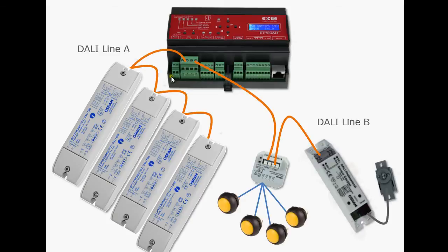All four ballasts are connected to DALI line A of the Ethernet to DALI. All input devices are connected to line B. Of course, you can have ballasts and input devices in one DALI line. One comment regarding light sensors: they are not defined in the current DALI standard. For this reason only OSRAM sensors are supported. And as they require constant polling, you should not have too many of them in one DALI line — let's say a maximum of eight.